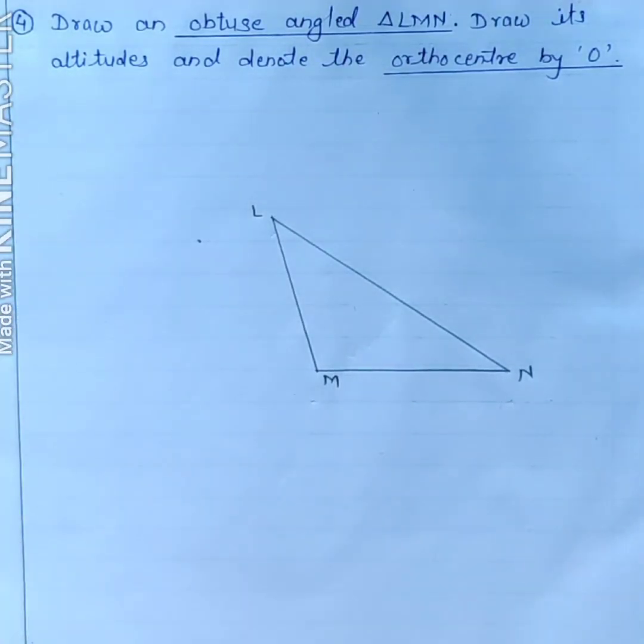What is altitude? Altitude is a perpendicular from the vertex to the opposite side of a triangle.